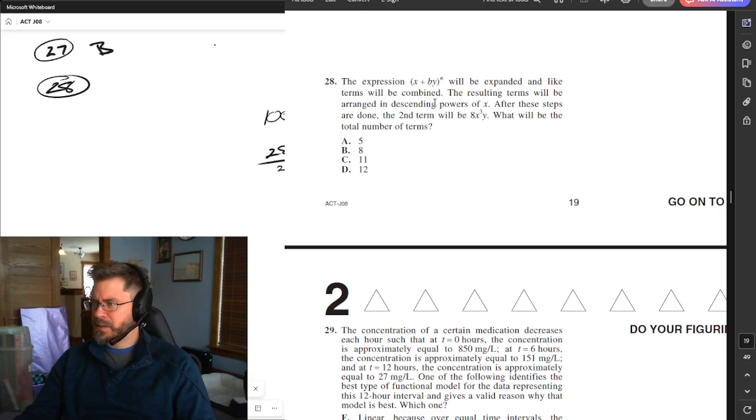We've got an exponential function, kind of. It's like a polynomial raised to a degree. The expanded term and combining resulting will be a range of powers of x. This is like a Pascal's Triangle thing. After these steps are done, the second term will be 8x cubed, will be the total number of terms.